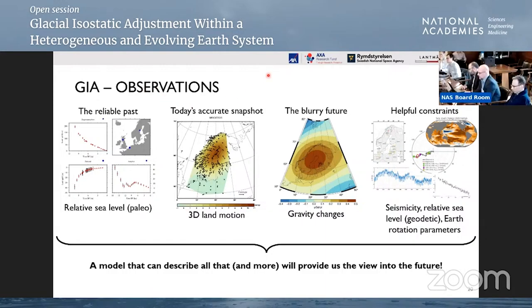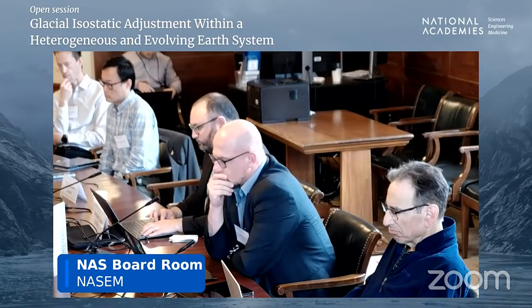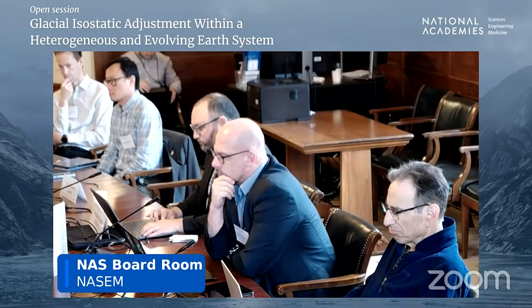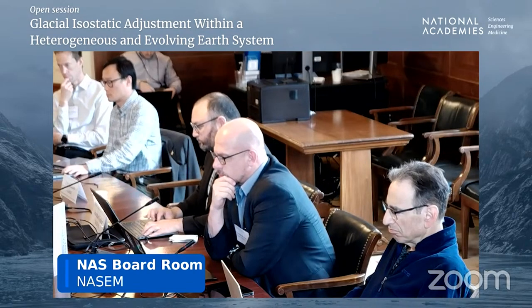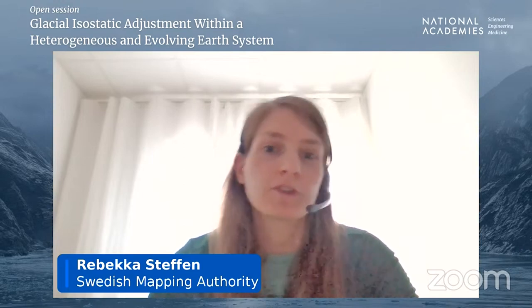Question from the moderator: You showed that for continental ice sheets, knowing the ice model was much more important for understanding stresses than the Earth model. Is that also true when we look at smaller ice masses and present-day change — is it mostly ice model uncertainty, or does Earth model uncertainty become more important in that case? Honestly, we don't know. But I would say the ice model is the most important constraint that we have. We have to know the ice model better for the stress changes, and then we can look at whether the Earth model changes matter more.